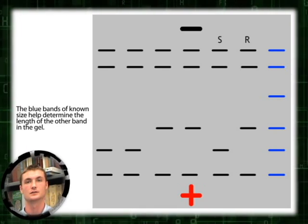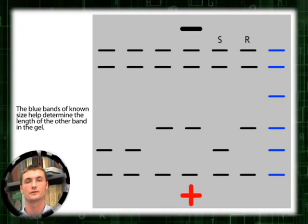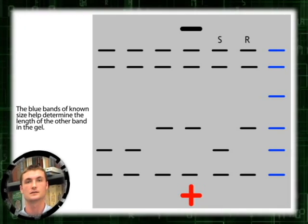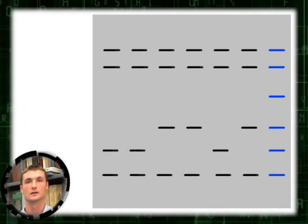Each lane on the gel contains PCR amplification products from a single plant. We can estimate the size of the fragments relative to a standard, shown here in blue.